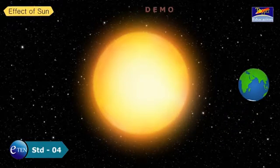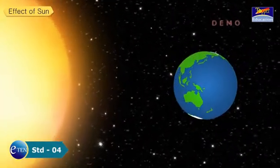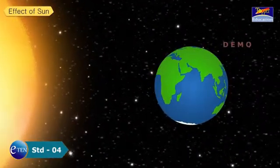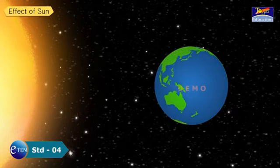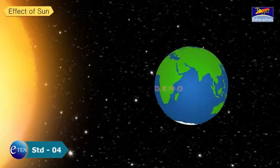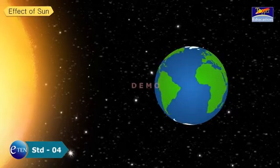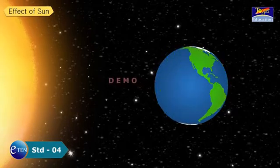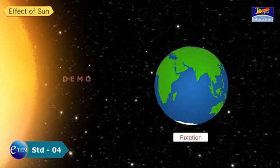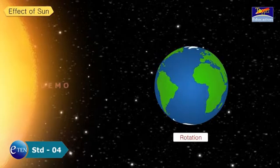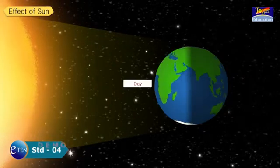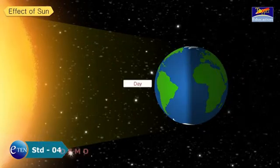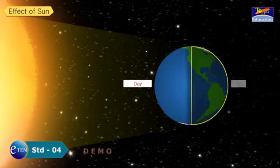The sun plays a major role in causing changes in weather conditions. The Earth spins on its axis — this is called rotation. The part of the Earth facing the sun has day, and the other part has night.